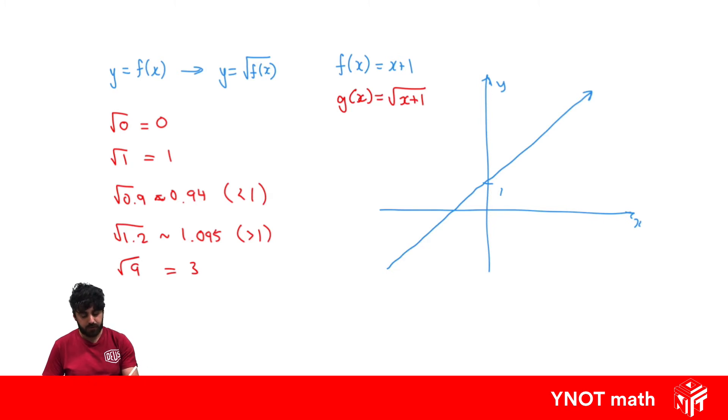Let's mark out some important points. Here we have y equals 0, and the square root of 0 is just 0, so we know our curve is going to start there. Here we have y equals 1, and the square root of 1 is 1, so the curve also goes through there.